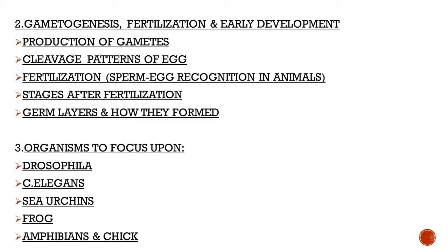Questions can come from gametogenesis, so study it well. Next: types of eggs and cleavage patterns. There are different types of eggs present according to organisms — isolecithal, telolecithal, centrolecithal — based on yolk concentration and absence or presence of yolk. Cleavage patterns include holoblastic cleavage, discoidal cleavage, and blastodisc. Questions on these topics appear in both Section B and Section C. You have to match which egg belongs to which organism, so remember not just the types but also the examples.